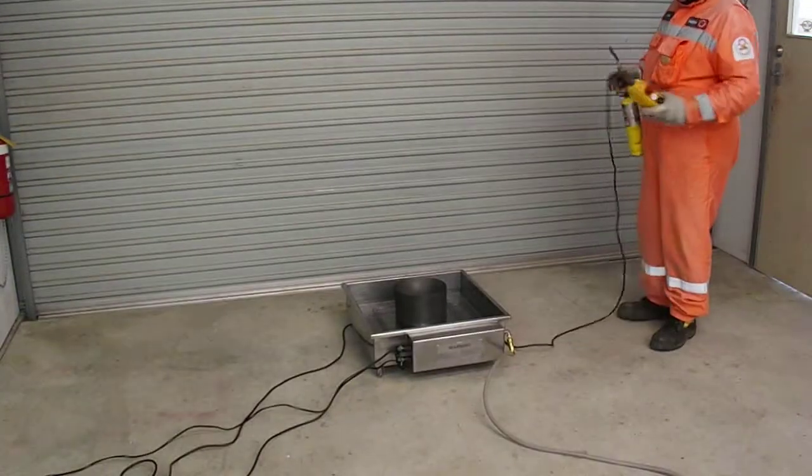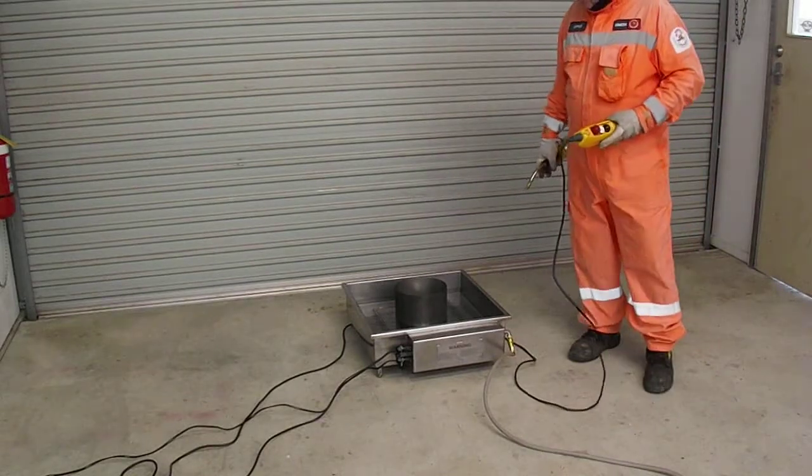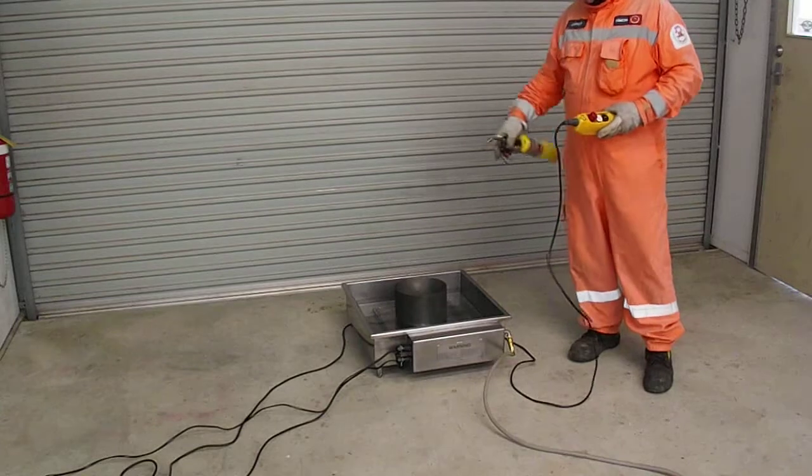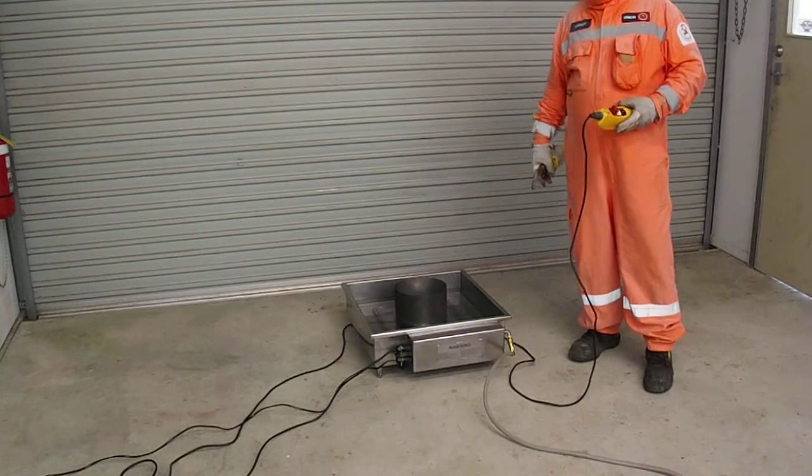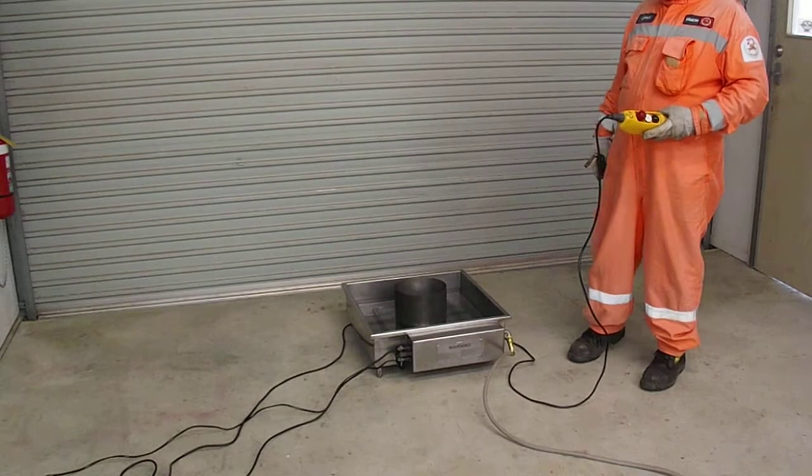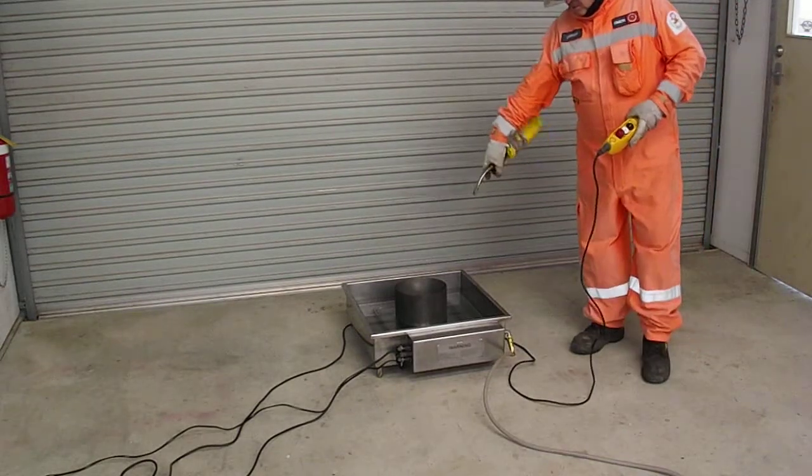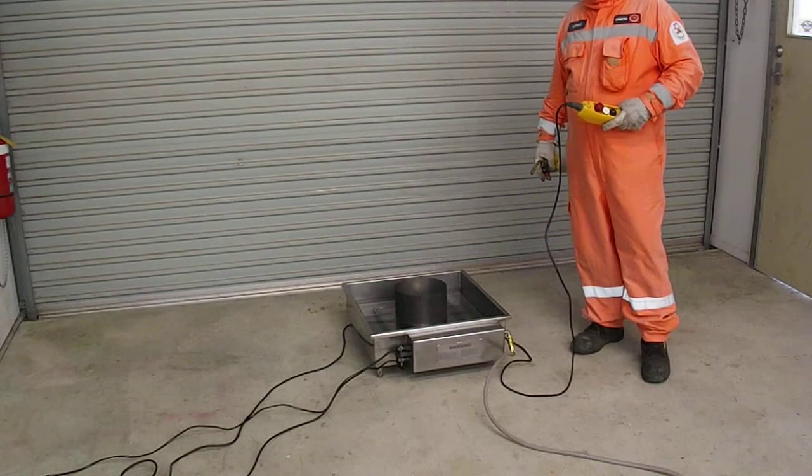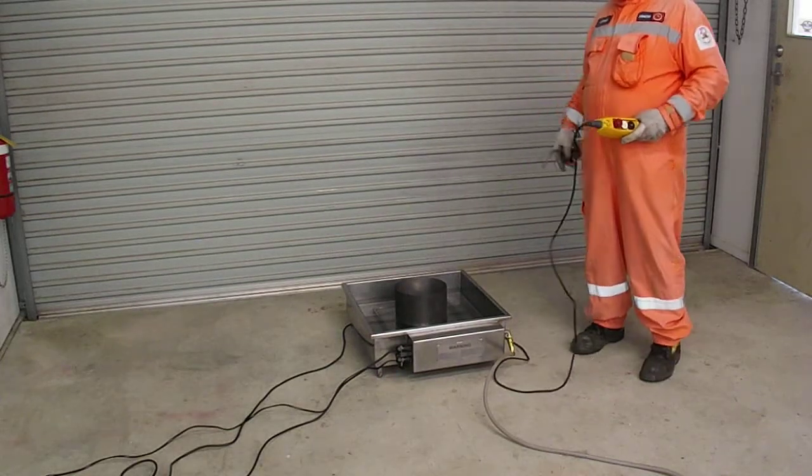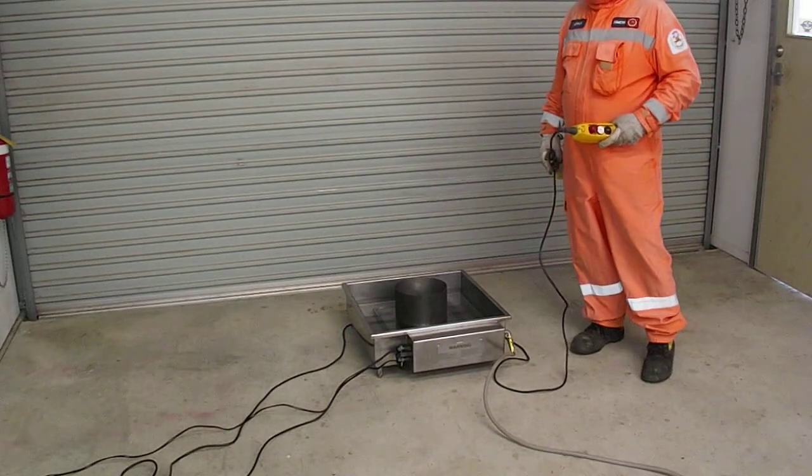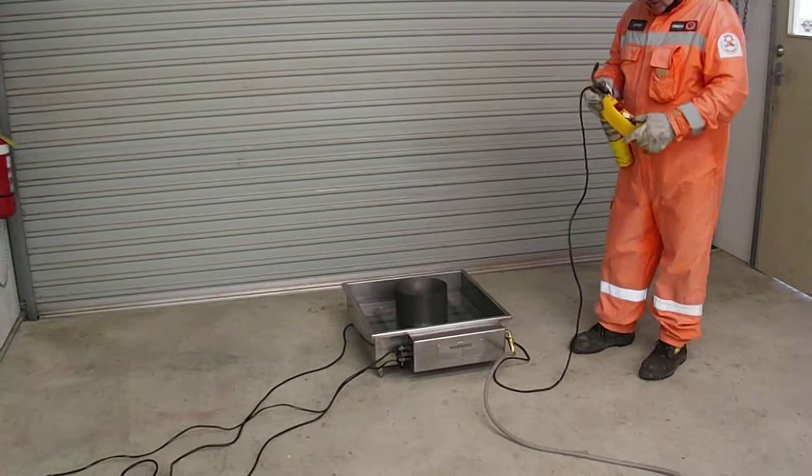With this burn tray simulator we've actually incorporated two simulators. One's the outer burn ring which is a traditional burn band using LPG as your source fuel. And the other one is the pot which simulates a kitchen fire. You can use a dry tea towel which has been dumped in water or wrung out to suppress the fire, or you can use a traditional fire blanket or fire extinguisher.